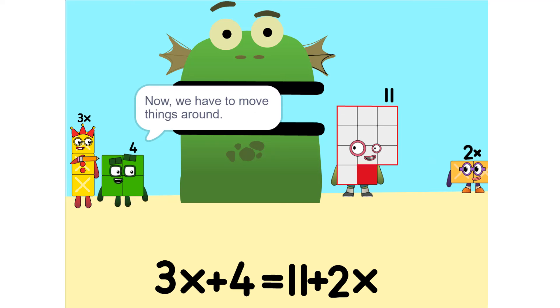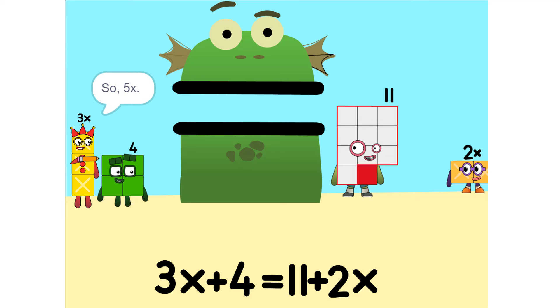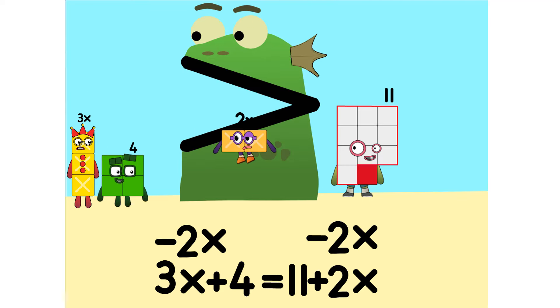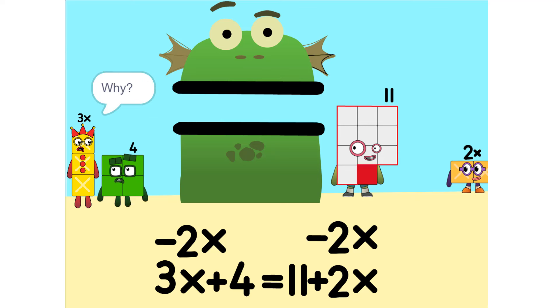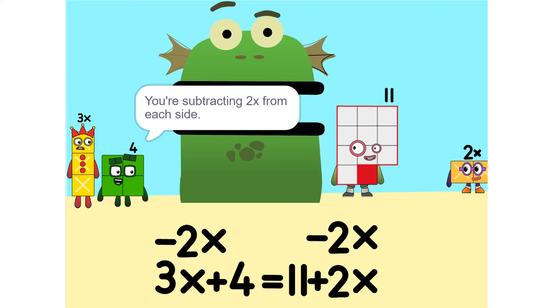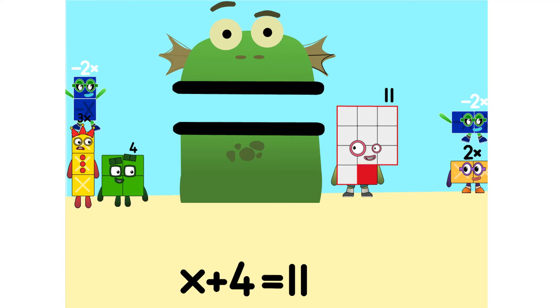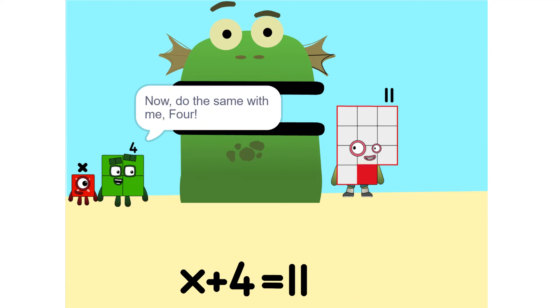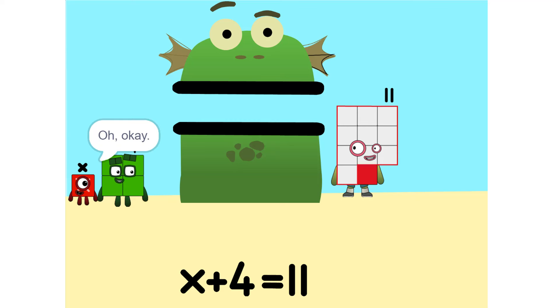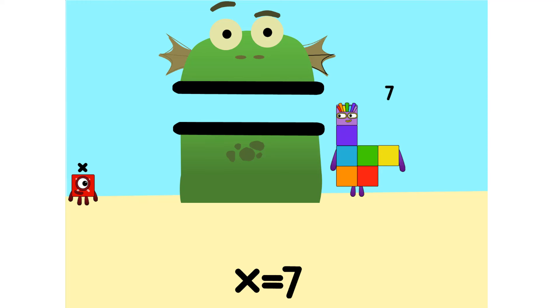Now we have to move things around. We have to move this 2x to this side. Whenever you switch sides, you have to switch its sign. So if it's positive, it becomes negative and vice versa. Why? Think of it this way. You're subtracting 2x from each side. So it'd just be 1x or x. Correct. Now do the same with 4. Okay. 11 minus 4 is 7.